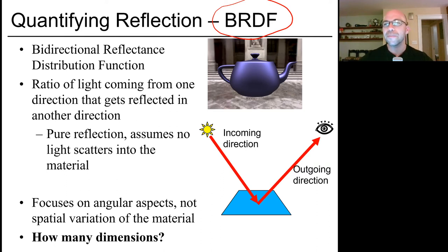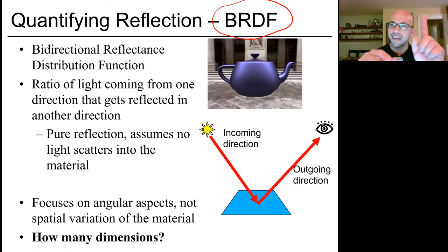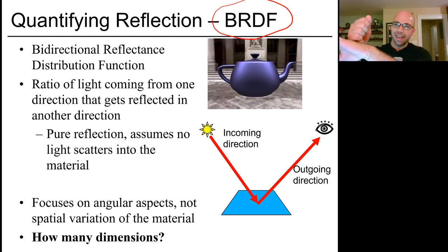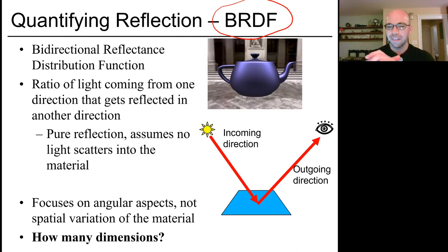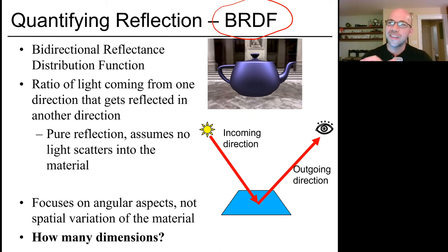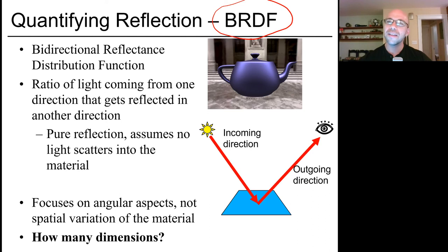There are other models beyond BRDF. Some materials like marble or skin have subsurface scattering, where light enters at one point, wiggles around underneath the surface, and comes out somewhere else — if you hold a light bulb to your hand, you'll see light coming out the side. In that case, graphics people use a function called BSSRDF — Bidirectional Subsurface Scattering Reflectance Distribution Function. BRDF is the basic one, and if you dig through graphics research papers you'll see lots of weird variations on that acronym.